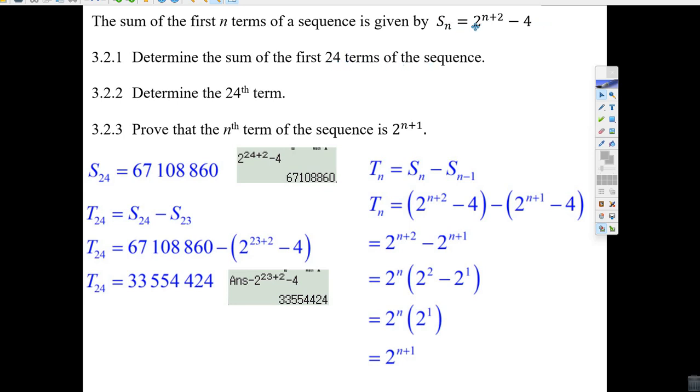So the sum of 24 terms, you just put 24 in there. 24 plus 2 minus 4, your calculator says it's 67,108,860. Now if you want to find the 24th term, you take 24 terms added up, minus 23 terms added up, the sum of 23, that'll give you the 24th term. So you need to think about it.